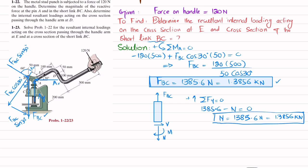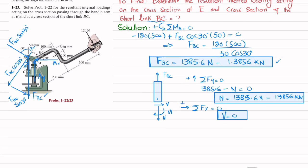That is the normal force in member BC. For shear force, applying sum of all forces along the X direction equals zero — the only force in that direction is shear force V — so V equals zero. For the moment, taking the reference point as O1, sum of all moments about O1 equals zero. Since all forces pass through O1 and there is no external moment, the moment M also equals zero. These are the answers for resultant internal loading in short link BC.